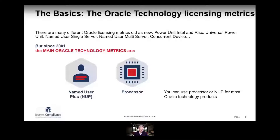But since 2001, the main two metrics have been Named User Plus — NUP in short — and the processor licensing metric. You will find almost any technology product out there being able to be licensed using these two metrics. They are by far the most common ones, and Oracle is doing their utmost to standardize this across all their engagements with customers.